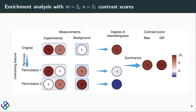Here are some cartoon illustrations of the contrast scores. For enrichment analysis with two replicates in the experimental condition and one replicate under the background condition, Clipper defines contrast scores by permutation to create a contrast. For each feature, Clipper summarizes its degree of interest from the original data and from the permuted data, then compares those degrees of interest and summarizes them into a contrast score. Clipper defines two contrast scores: the max score and the difference score, and empirical analysis is used to choose the default implementation for each scenario.